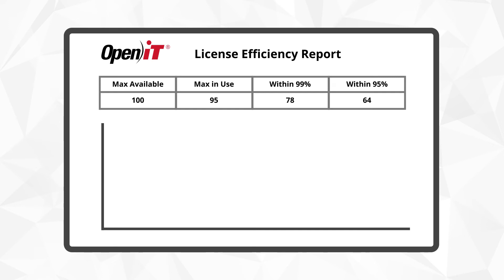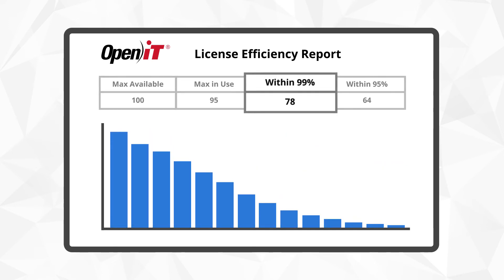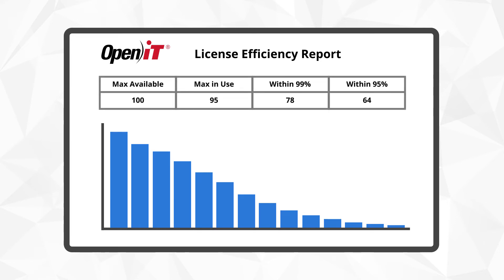Do you need to buy more licenses? If this is your concern, this chart tells you that 99% of the time it's enough to have 78 licenses to cover user demands. Different companies have different requirements — some require that everyone should be able to use licenses when they need to, while some can tolerate shortages and a few wait times for 1% to 5% of the time. This report can guide and help you in making business decisions like this.